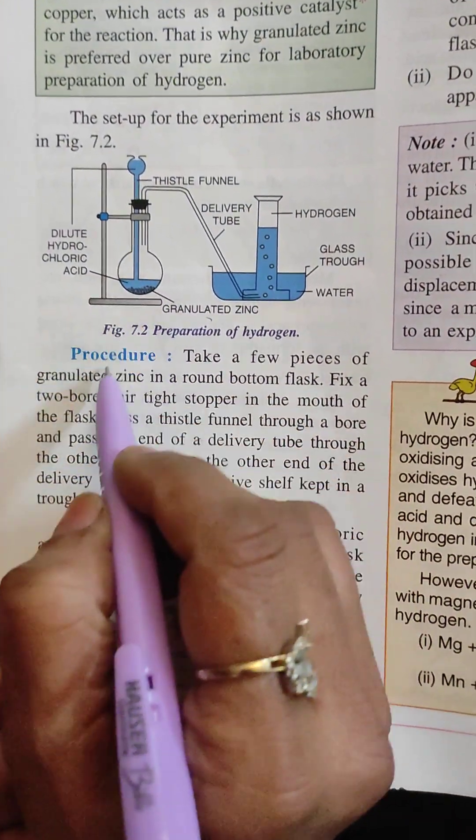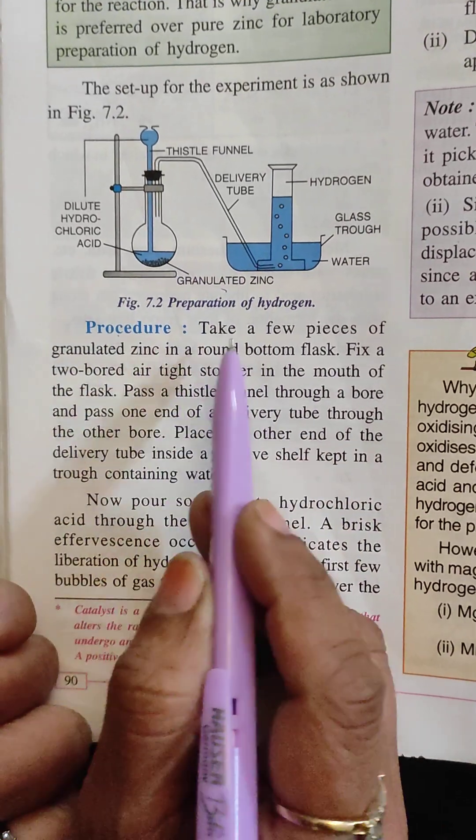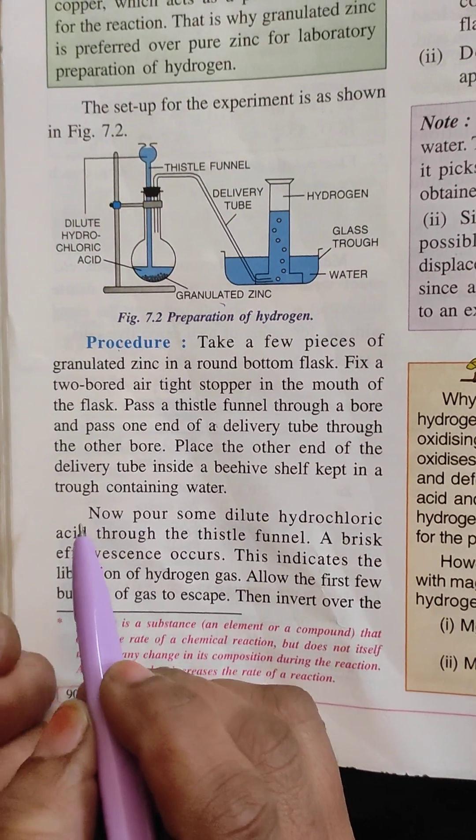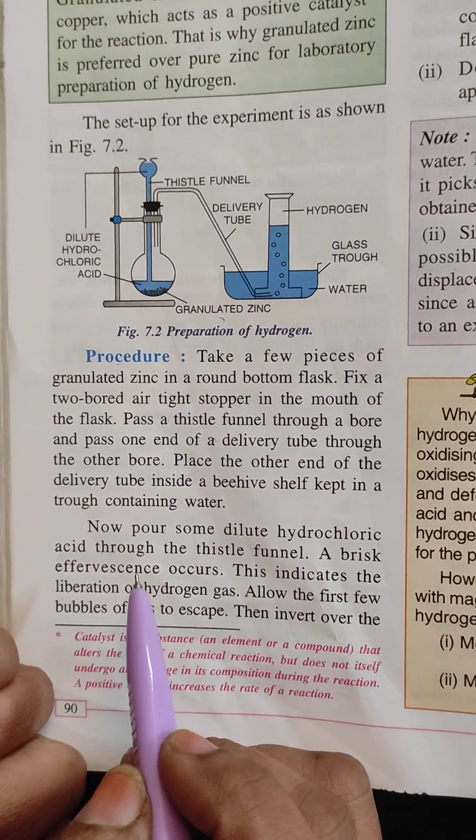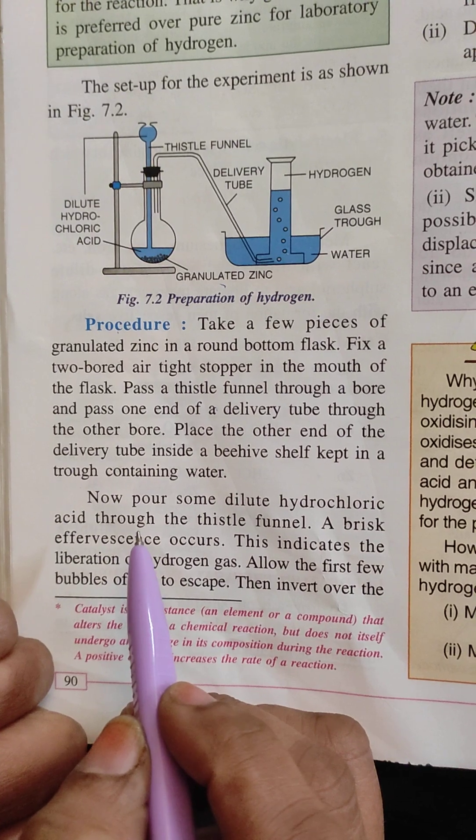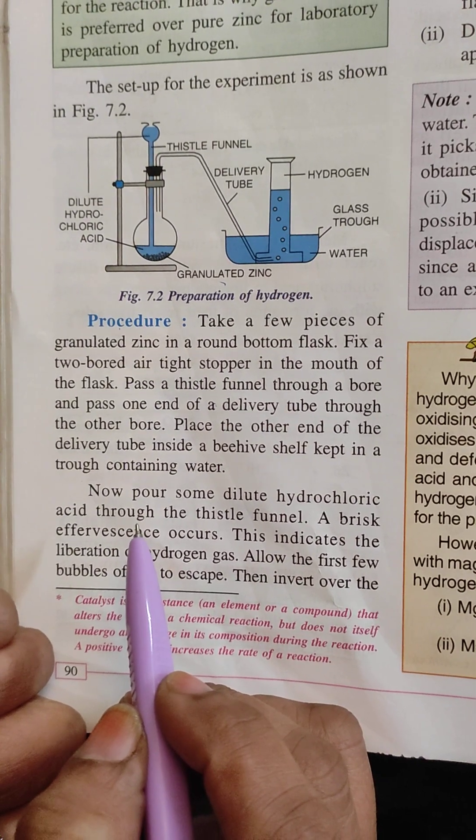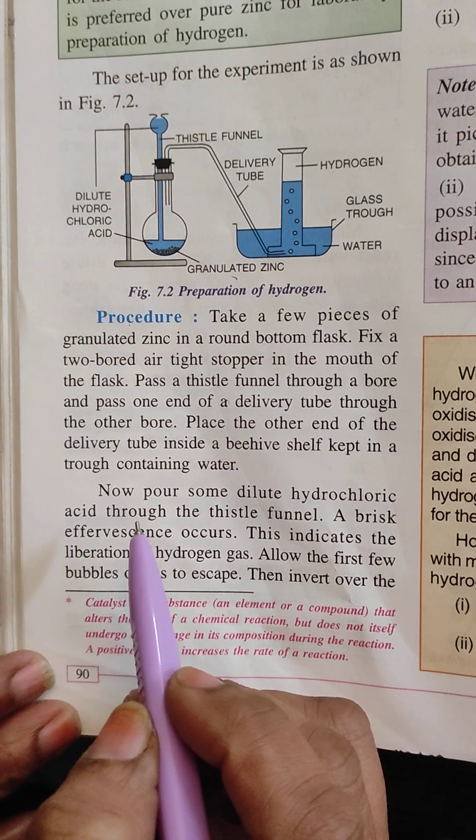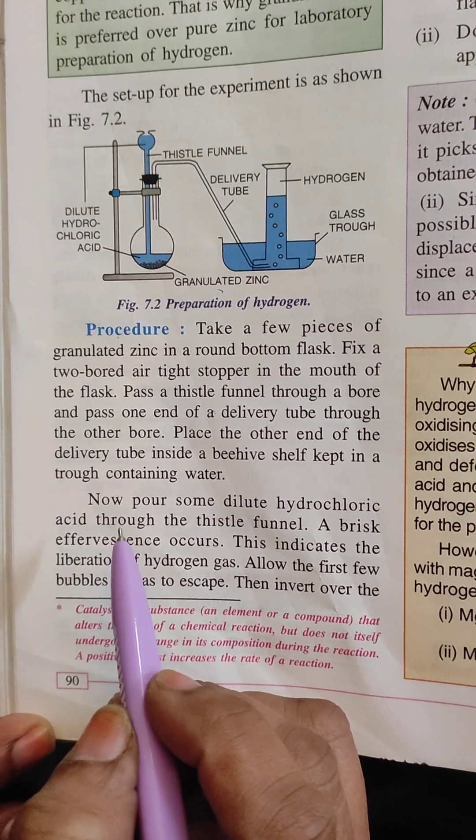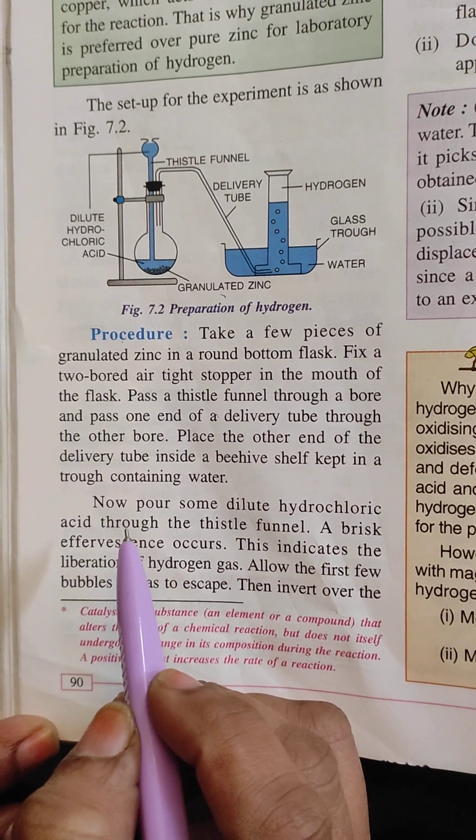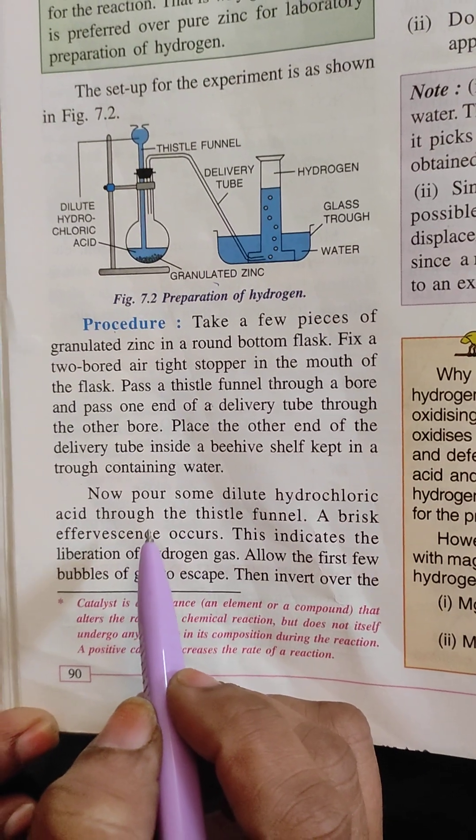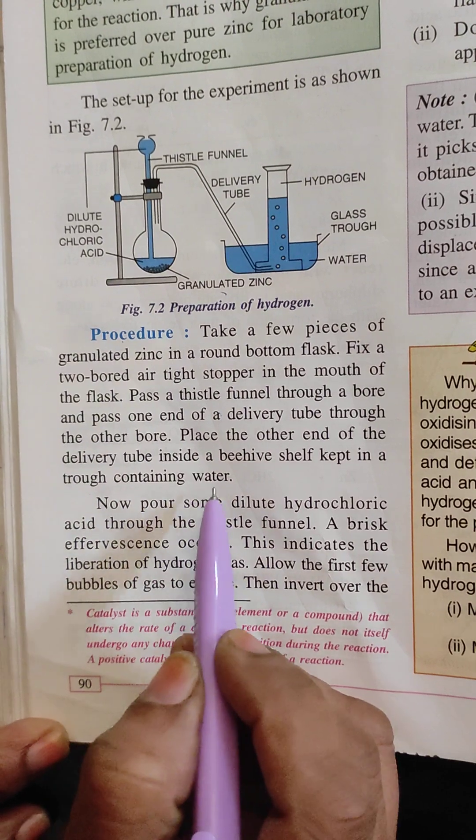Take a few pieces of granulated zinc in a round bottom flask. Fix a two-bored airtight stopper in the mouth of the flask. Pass a thistle funnel through a bore and pass one end of a delivery tube through the other bore. Place the other end of the delivery tube inside a beehive shelf kept in a trough containing water.